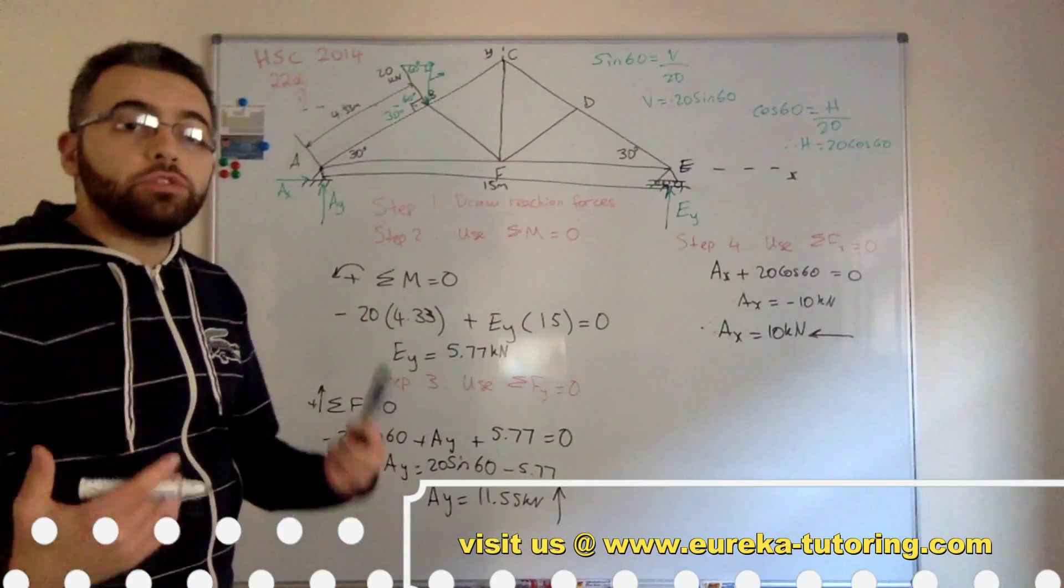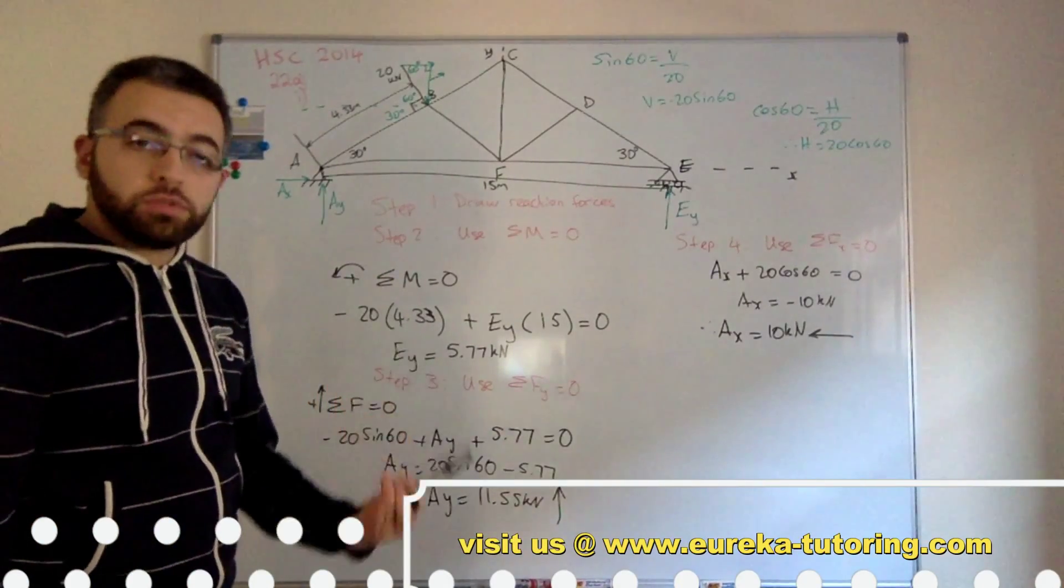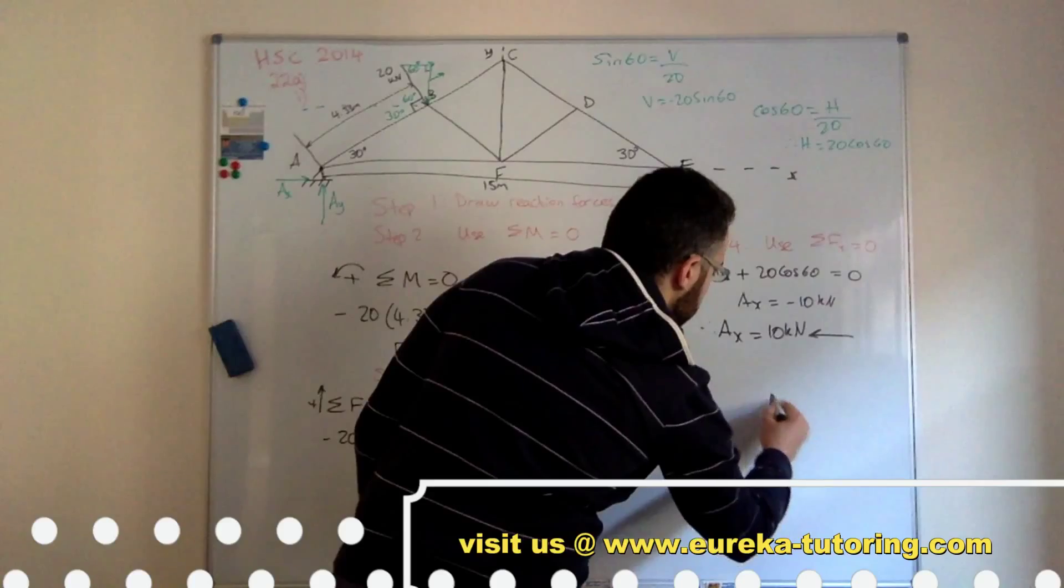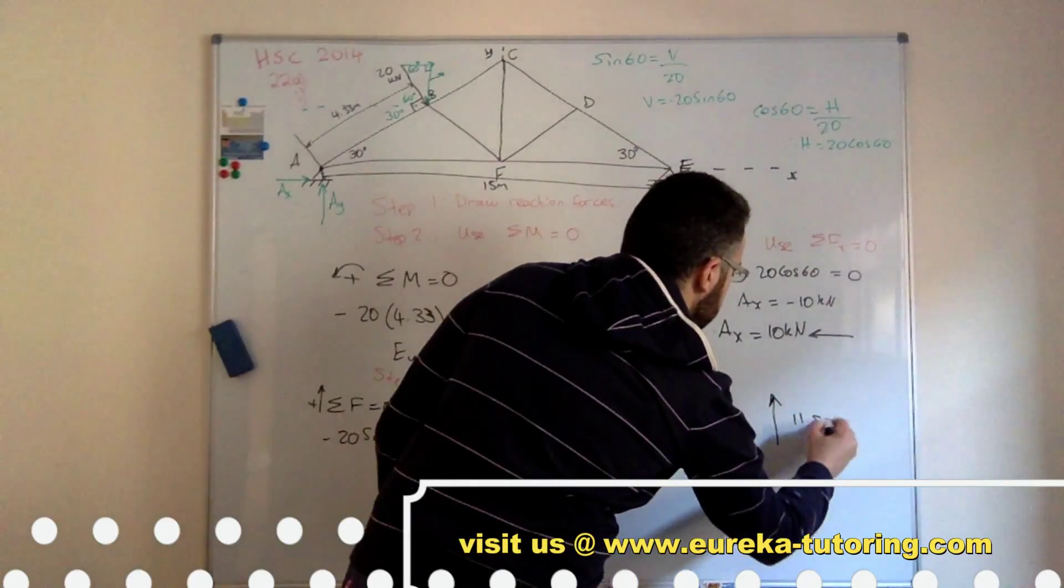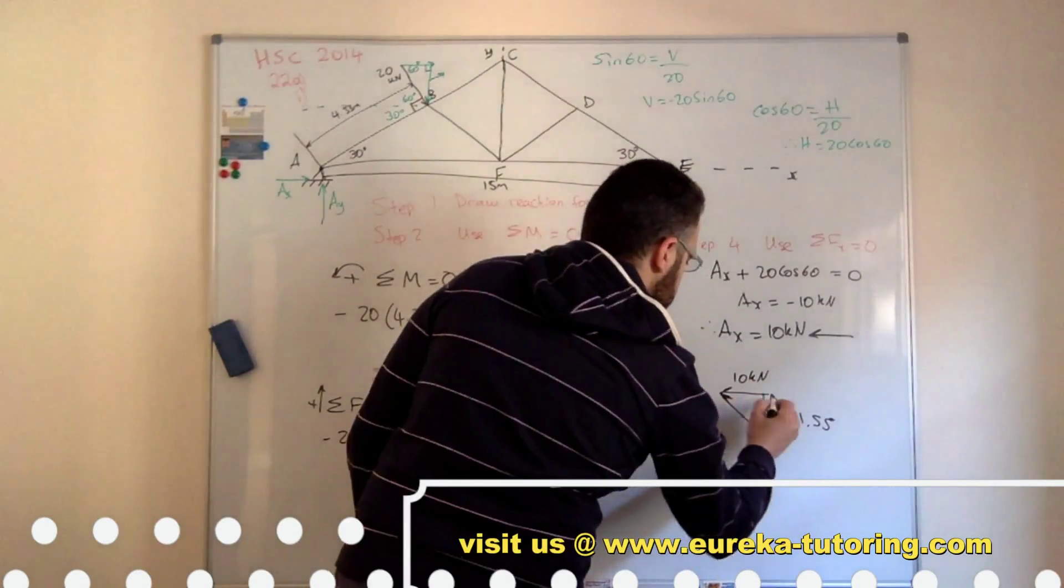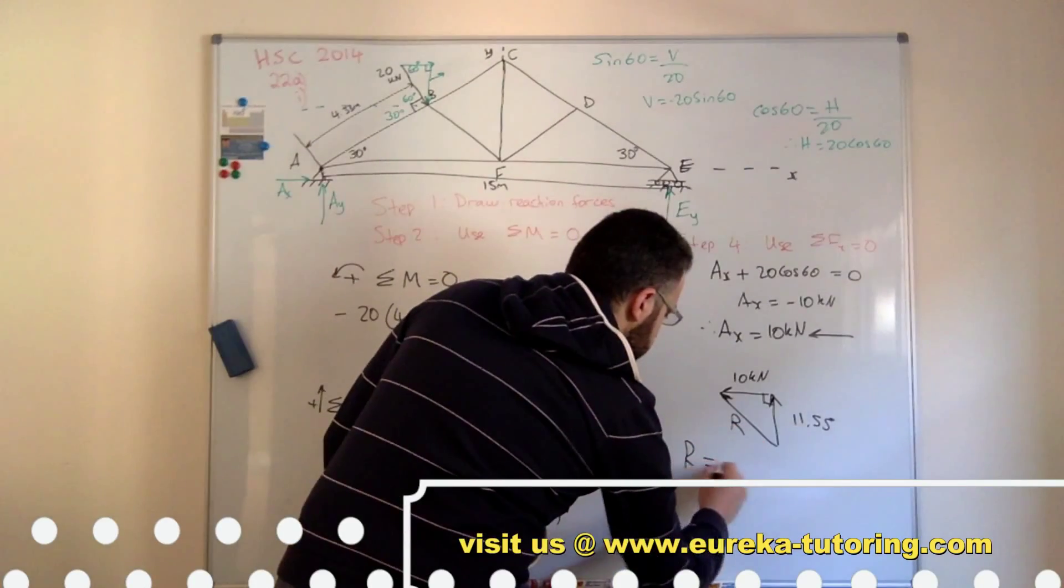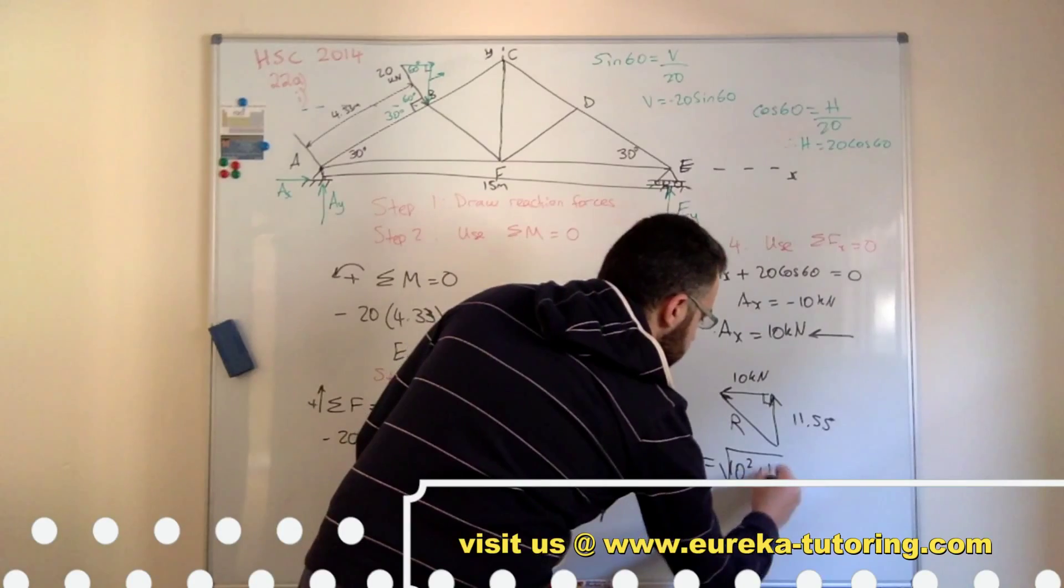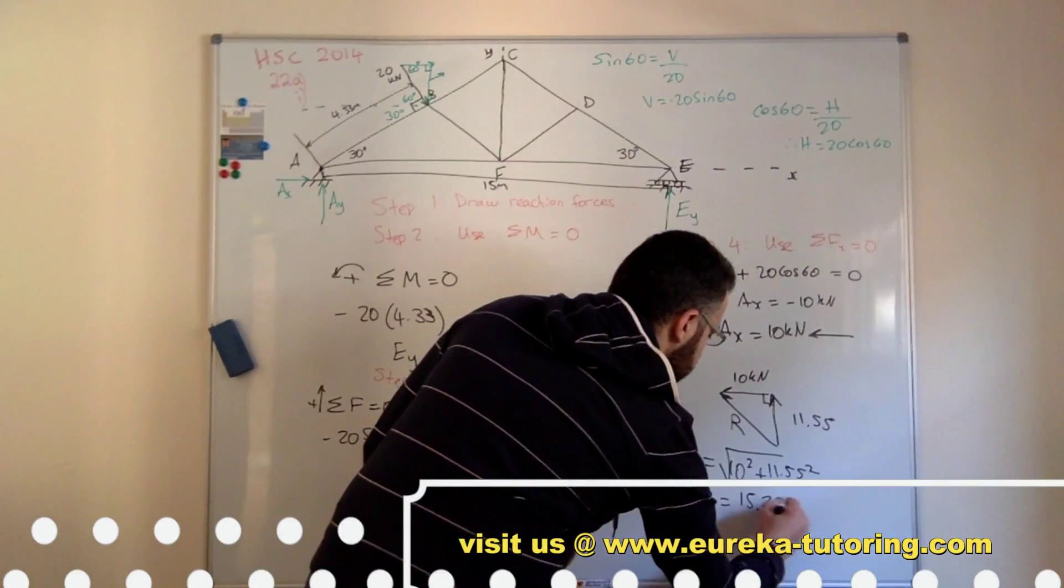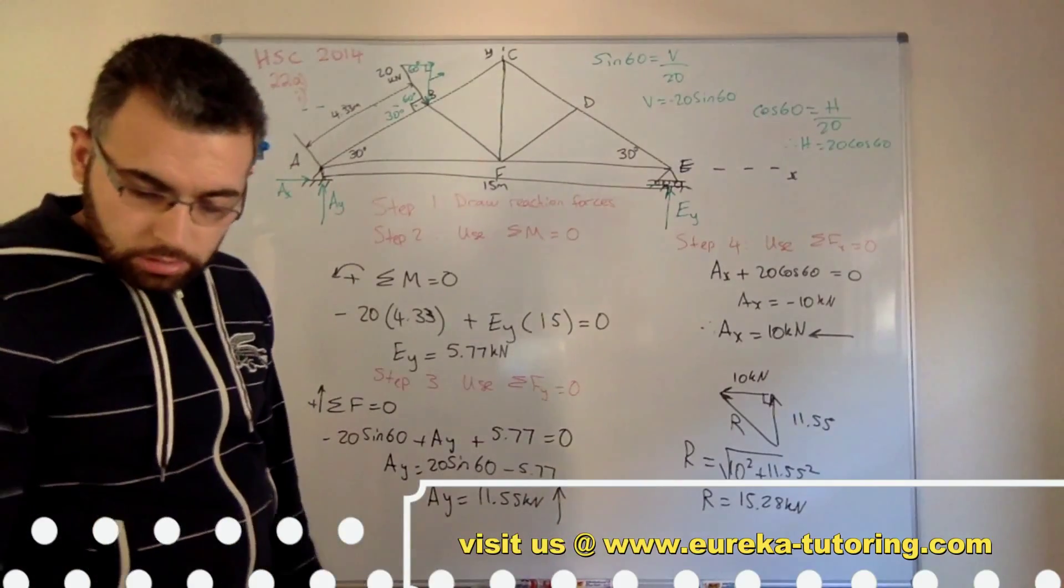Okay. Now we ask for the reaction at pin joint A. With pin joint A there's two forces, that means we need a resultant force. So we need to use Pythagoras. So we draw up our vectors into its triangle. So there's its vertical, there's its horizontal, and there's its resultant. So I'll call this R. So R equals square root 10 squared plus 11.5 squared. R equals 15.28 kilonewtons. So that's just using simple Pythagoras. And yep, that's correct.